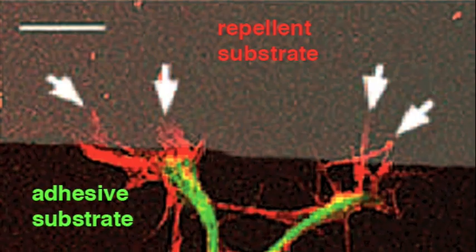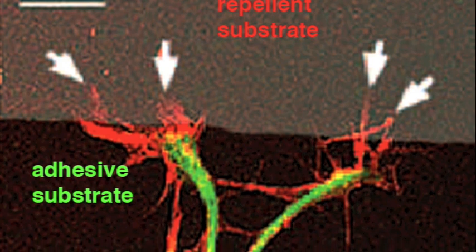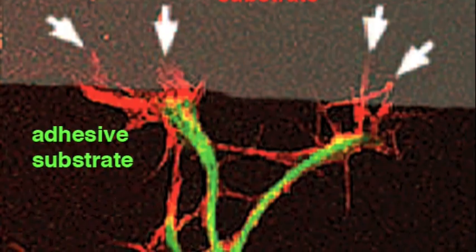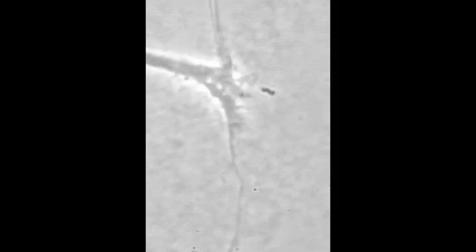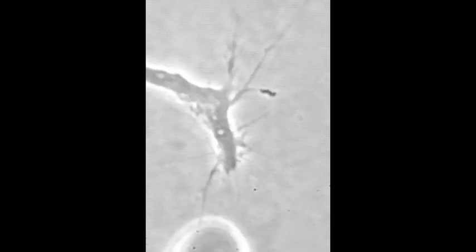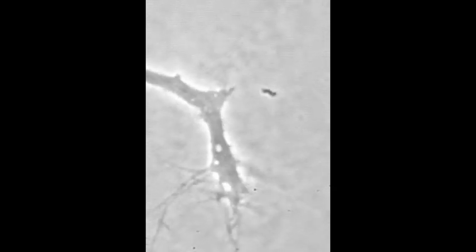In this picture, a growth cone hesitates at a border with a surface coated by a repulsive molecule. Filopodia, in red, test the surface, but the axon in green turns to remain on its preferred pathway. This video shows a growth cone turning at such a guard rail to remain on the preferred pathway.